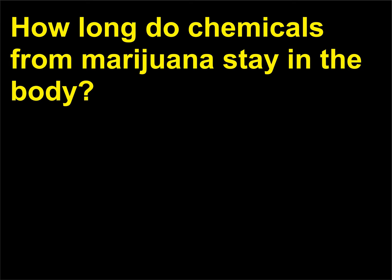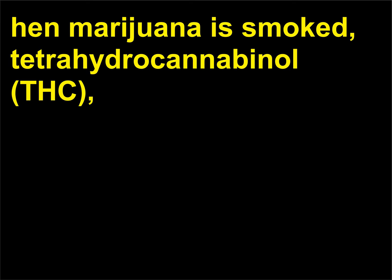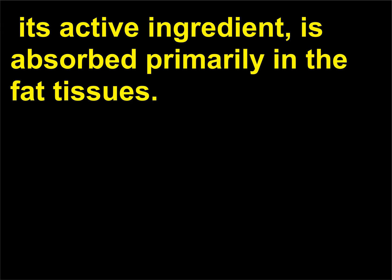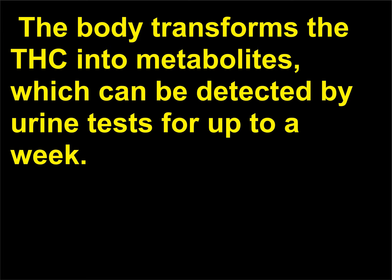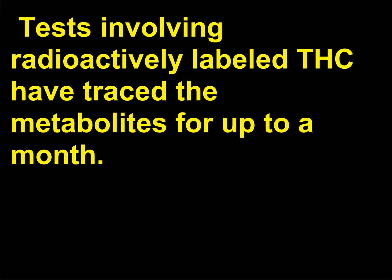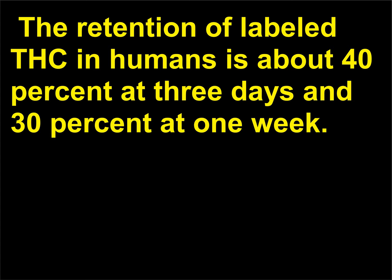How long do chemicals from marijuana stay in the body? When marijuana is smoked, tetrahydrocannabinol (THC), its active ingredient, is absorbed primarily in the fat tissues. The body transforms the THC into metabolites, which can be detected by urine tests for up to a week. Tests involving radioactively labeled THC have traced the metabolites for up to a month. The retention of labeled THC in humans is about 40% at 3 days and 30% at 1 week.